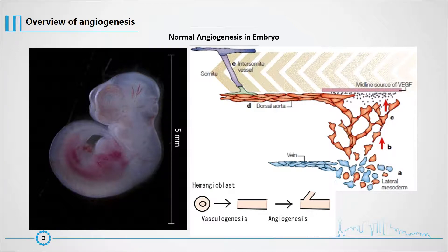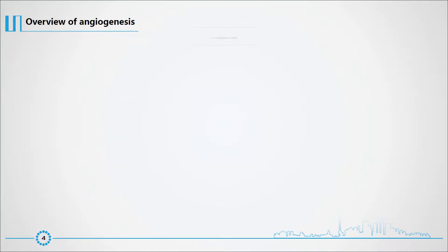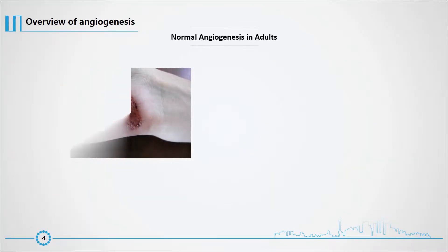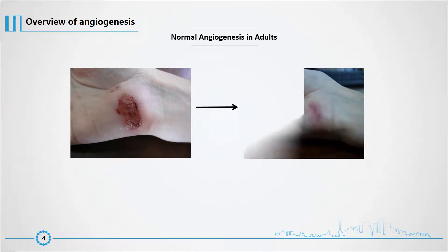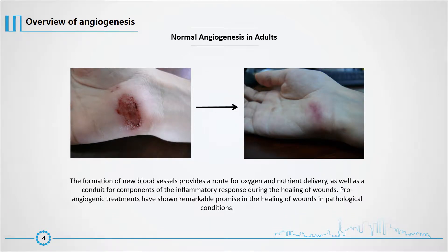Vasculogenesis occurs in the extraembryonic and intraembryonic tissues of embryos. The formation of new blood vessels provides a route for oxygen and nutrient delivery, as well as a conduit for components of the inflammatory response during the healing of wounds. Pro-angiogenic treatments have shown remarkable promise in the healing of wounds in pathological conditions.